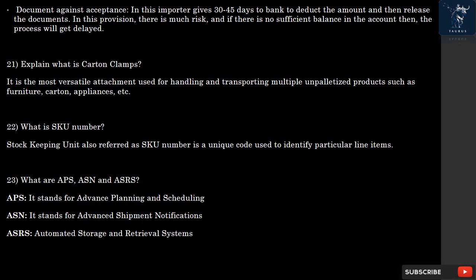Question 23: What are APS, ASN, and ASRS? APS stands for Advanced Planning and Scheduling. ASN stands for Advanced Shipment Notifications. ASRS stands for Automated Storage and Retrieval Systems.